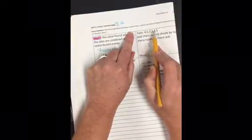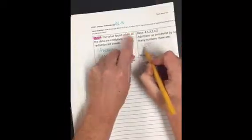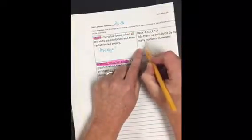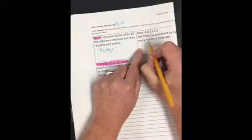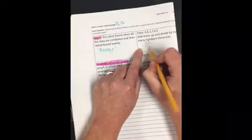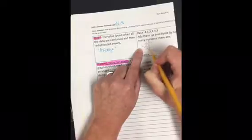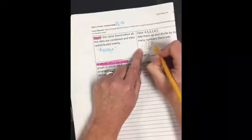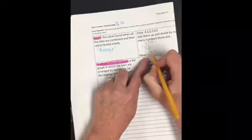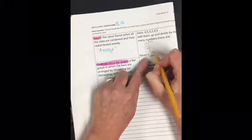And then we divide by how many numbers? 1, 2, 3, 4, 5, 6. 6 does not go into 2, 6, and to 23 goes 3, which is 18 with a remainder of 5. So then you have 3 and 5 sixths as your mean.